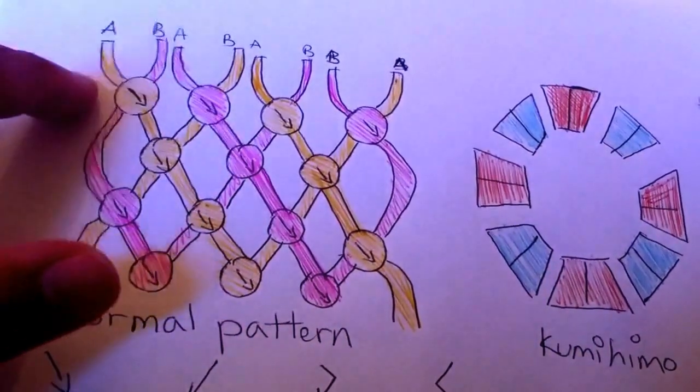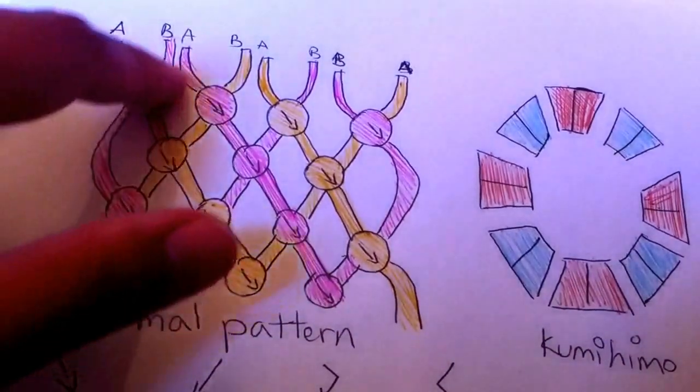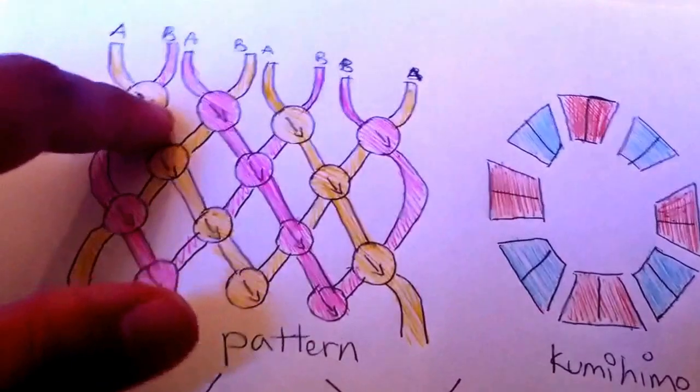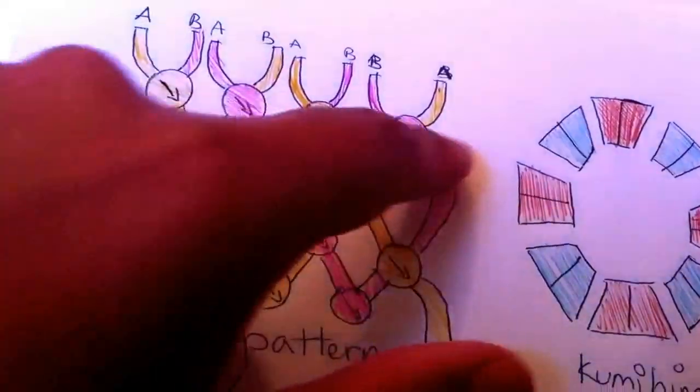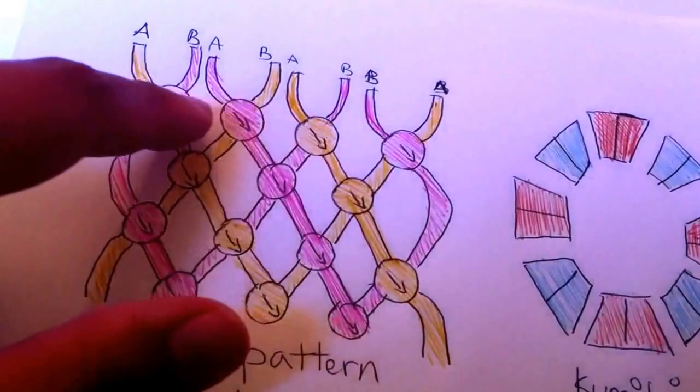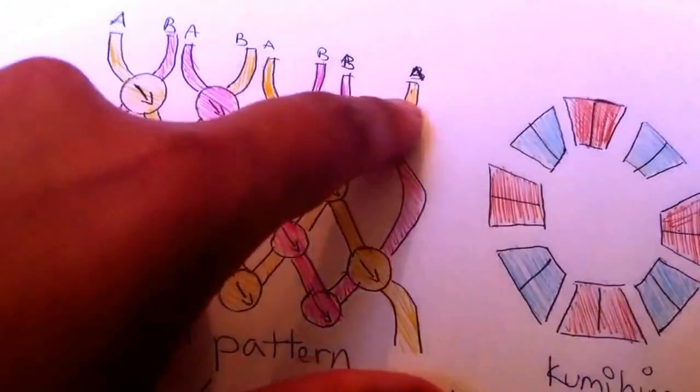After that, what you want to look at is how many strings are in the pattern. Each one of these little loops here is a string, so this pattern consists of one, two, three, four, five, six, seven, eight.